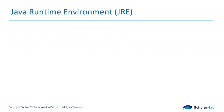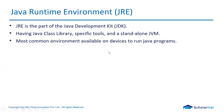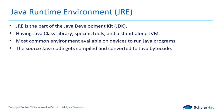JRE, or Java Runtime Environment, is part of the JDK and contains the Java class library, specific tools, and a standalone JVM. It is the implementation of JVM that physically exists, and hence we can install JRE. It provides the platform to execute and run Java programs and consists of a variety of libraries in the form of .jar files required to execute the program. We can run Java programs using JRE, but we can't compile Java code using JRE as it does not contain any compiler or debugger.